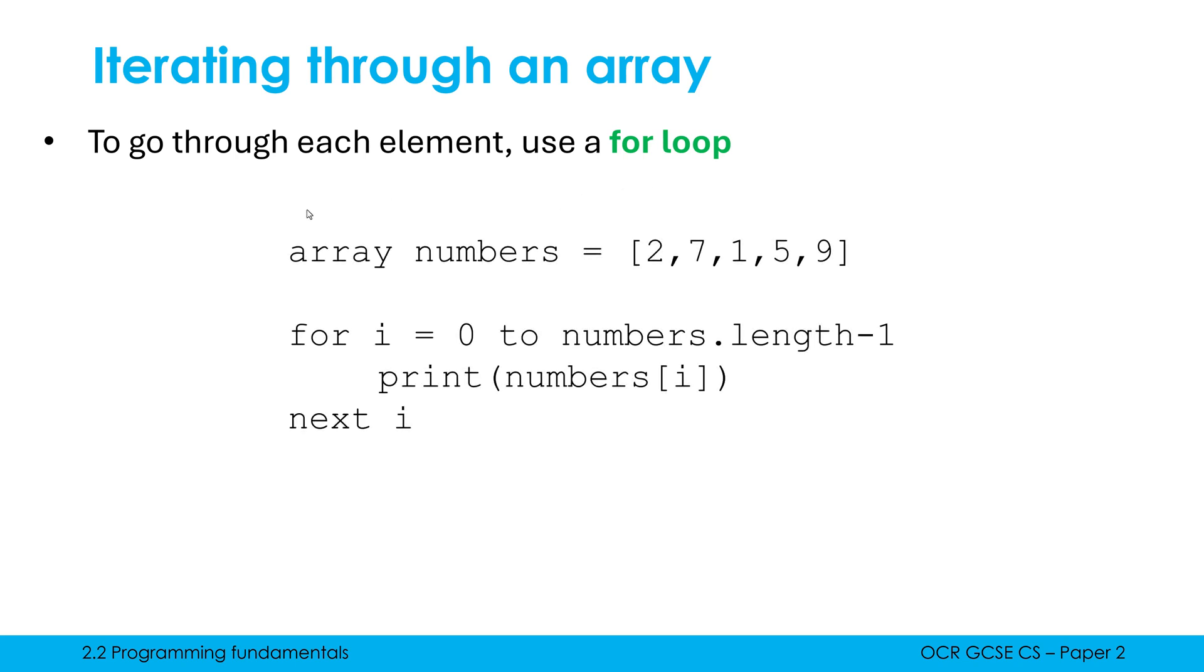This example here is just me printing all the numbers in this numbers array. So let's have a look at how this code actually works. We've got i being initially assigned to zero and we're going to keep adding one to i until it is equal to numbers.length minus one. Now, where is this coming from?